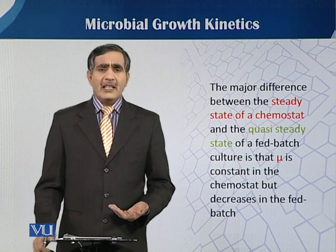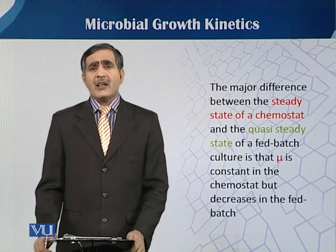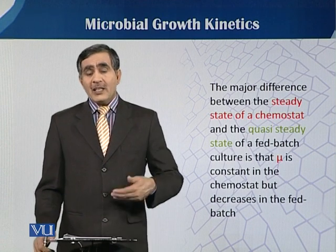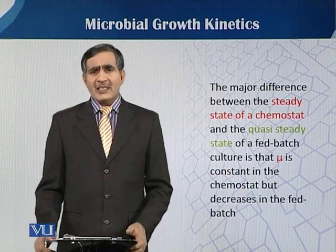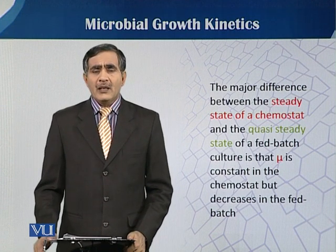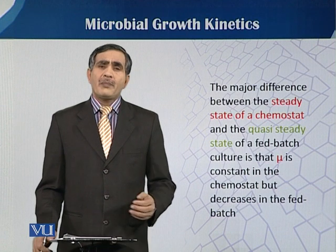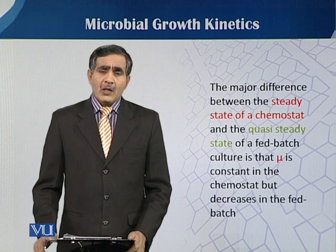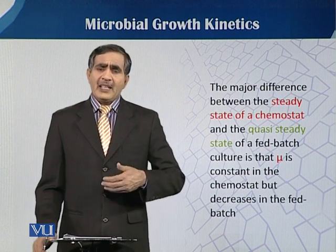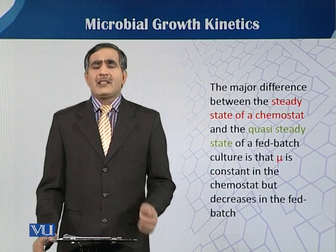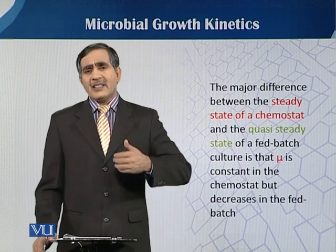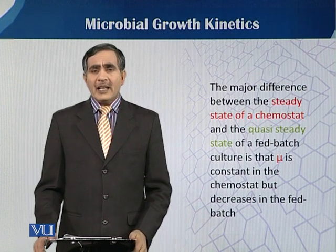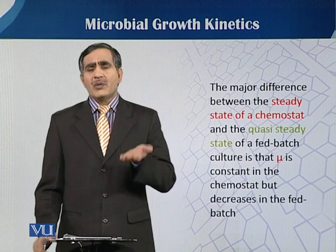Why does mu decrease in fed batch but remain constant in a chemostat? When mu equals D, there is no change in biomass concentration — dX/dt equals zero. This is only possible when residual substrate is also zero. If substrate is added such that residual substrate concentration increases, there will be a gradual increase of those substrates.